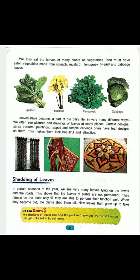The next point is the shedding of leaves. In certain seasons of the year, in March or April, we generally see many leaves lying on the lawns and on the roads. This shows that the leaves of plants are not permanent — when they are of no use for the plant, the plant sheds them, and when needed, new leaves grow. The shedding of leaves also helps the plant to throw out harmful waste that gets collected in the old leaves.